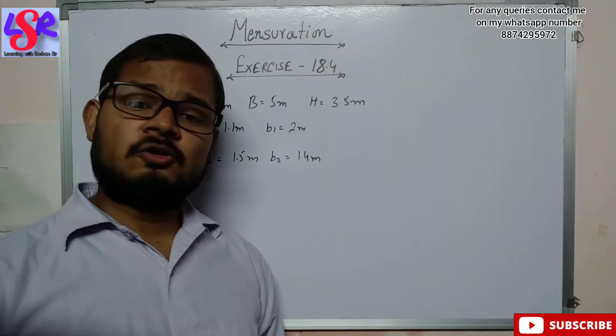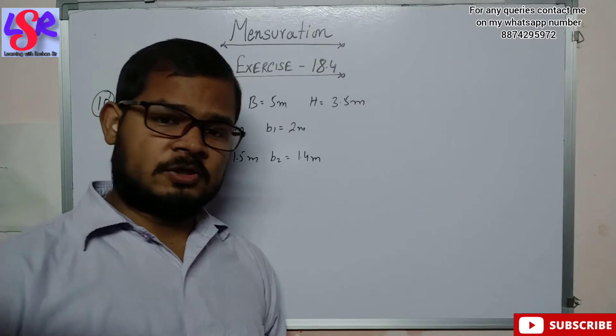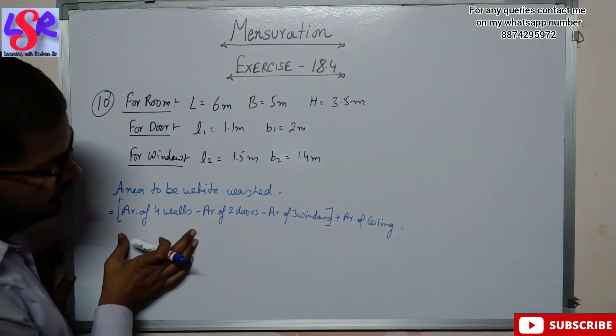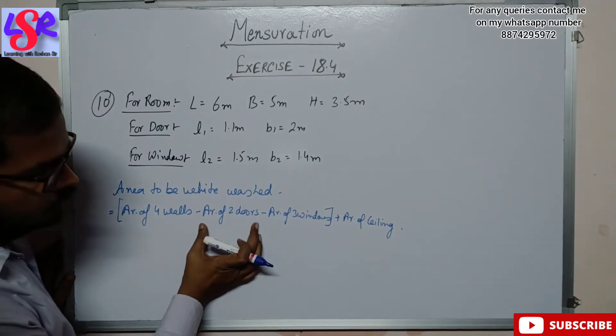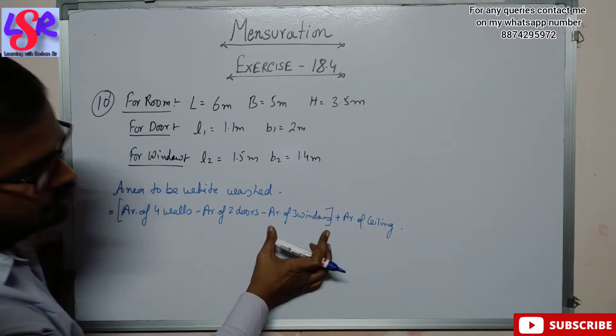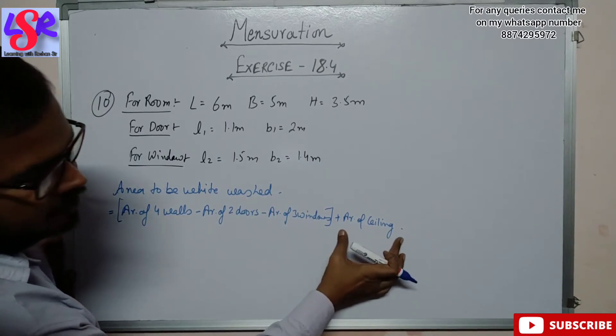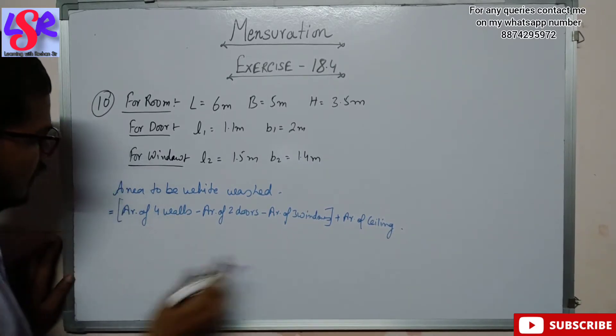So the area to be whitewashed equals the area of four walls minus the area of two doors minus the area of three windows plus the area of ceiling.